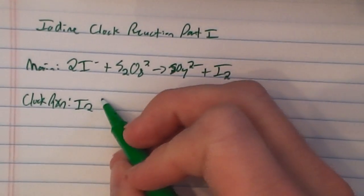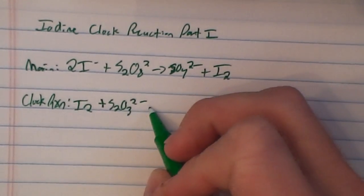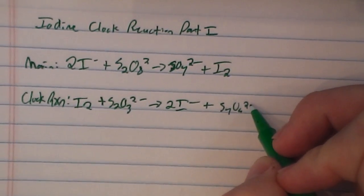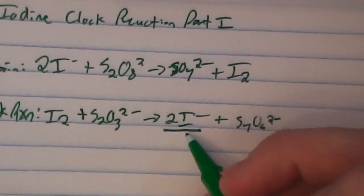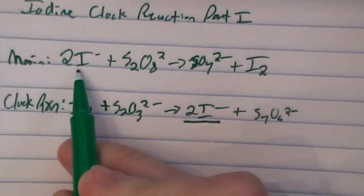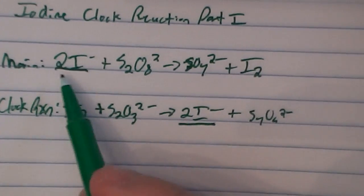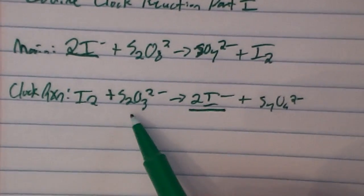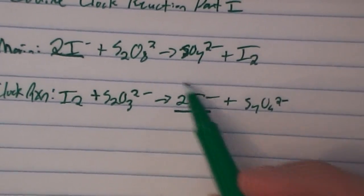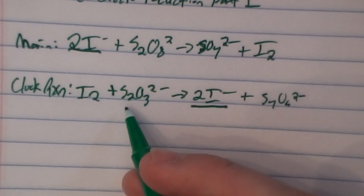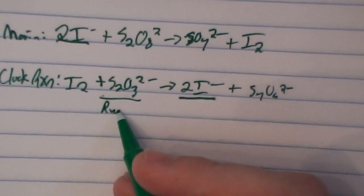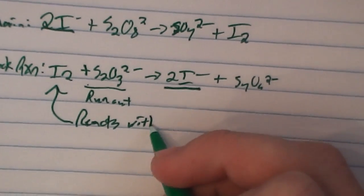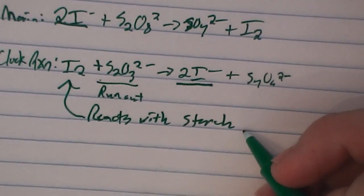That iodine will react with thiosulfate (S₂O₃²⁻) to form iodide and a byproduct. The iodide is the first reactant in the main reaction, so this is where the clock reaction takes place — the iodine is immediately consumed by thiosulfate to regenerate iodide, and this cycle continues until all of the thiosulfate runs out. Once the thiosulfate is gone, the iodine then reacts with starch, which is used as an indicator, and the solution turns blue — that indicates when the reaction is completed.